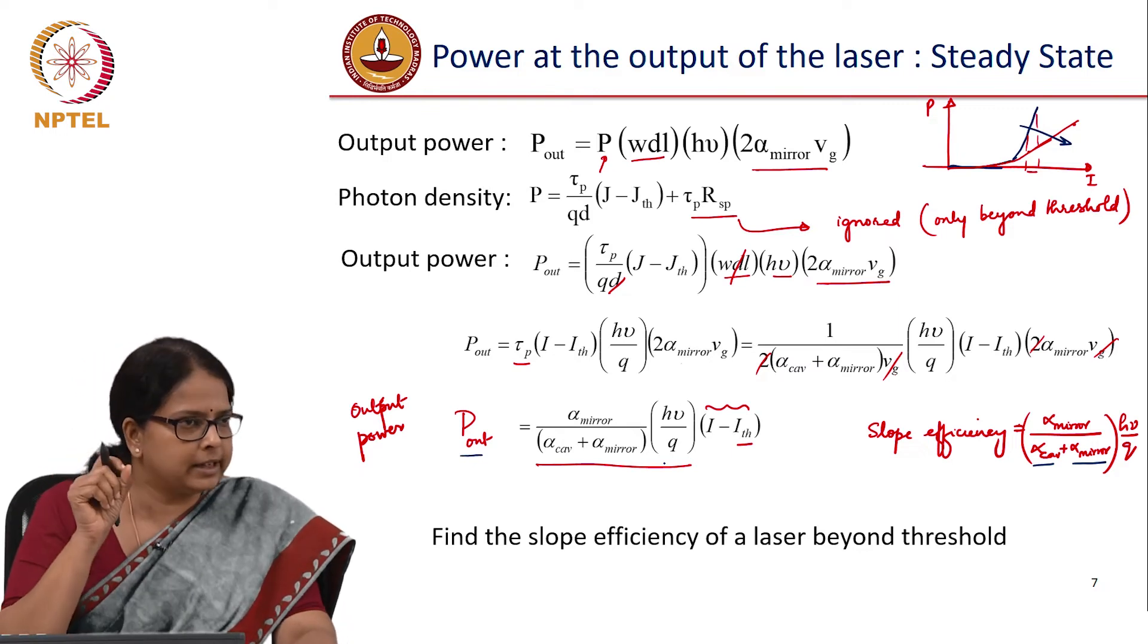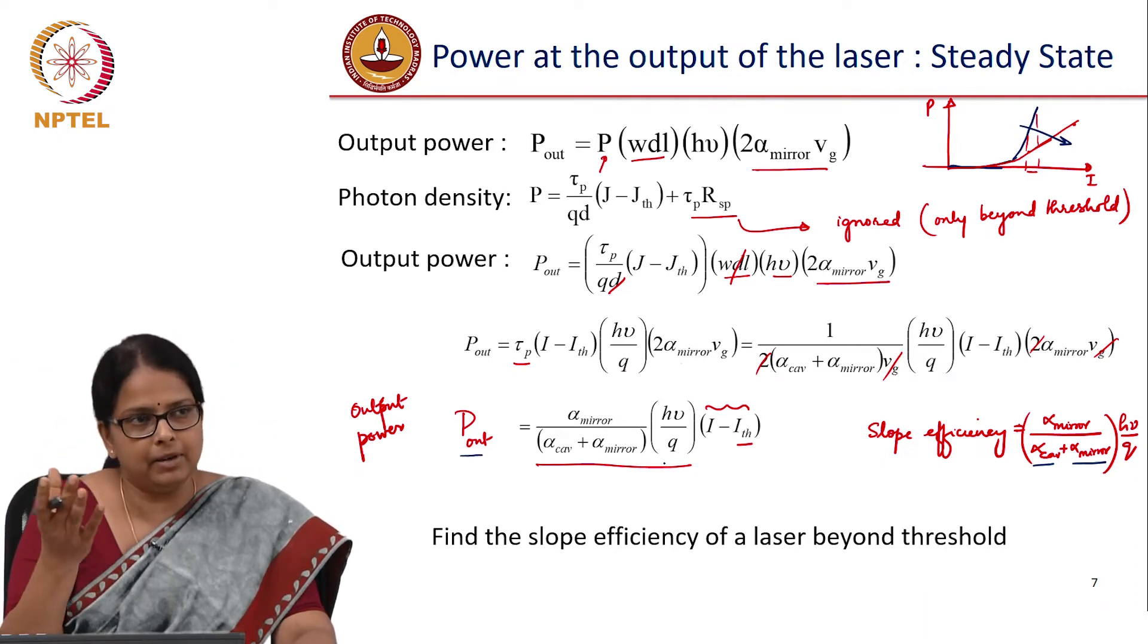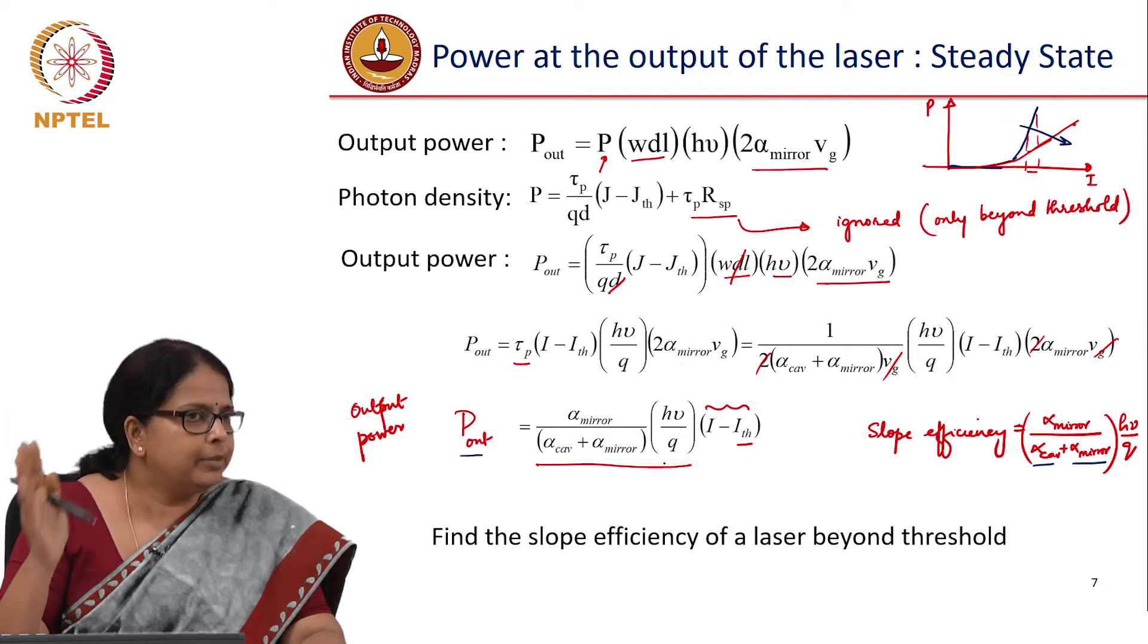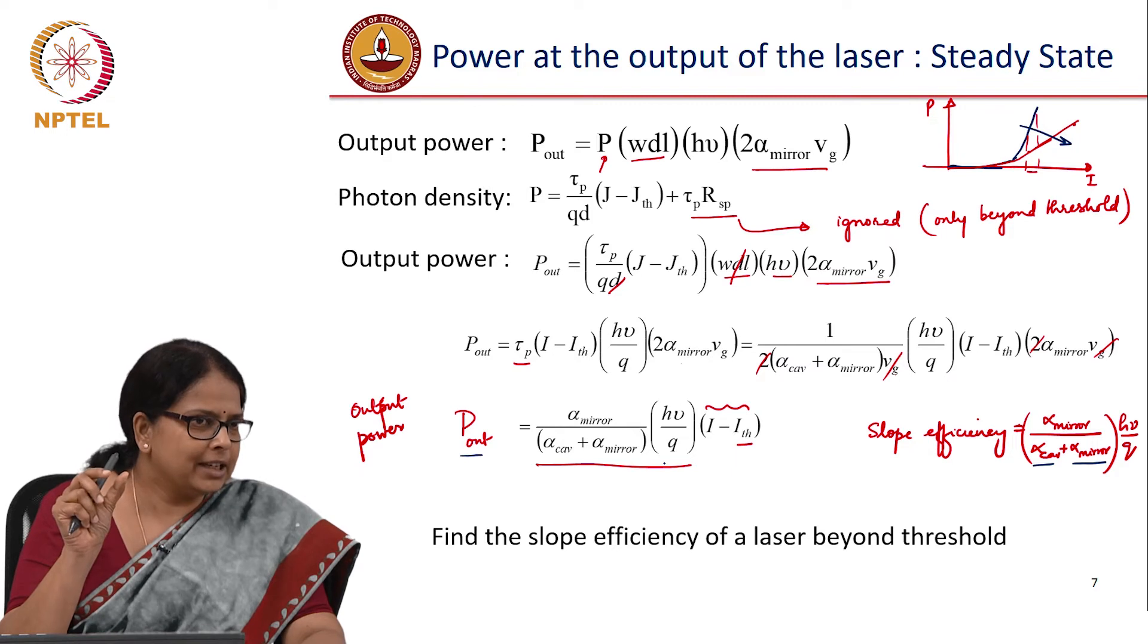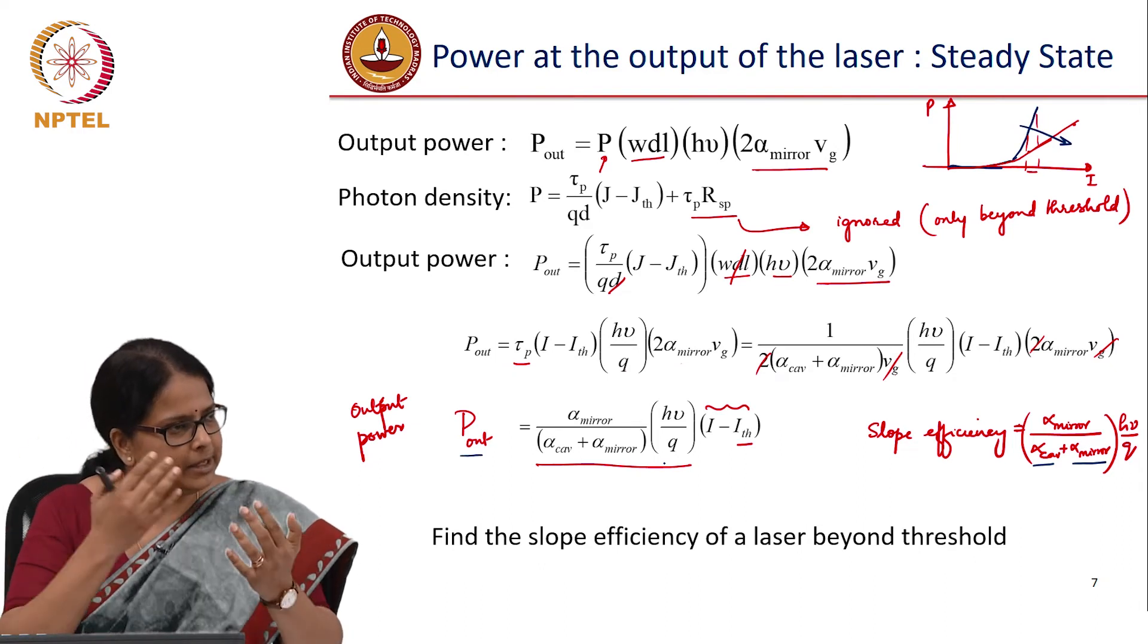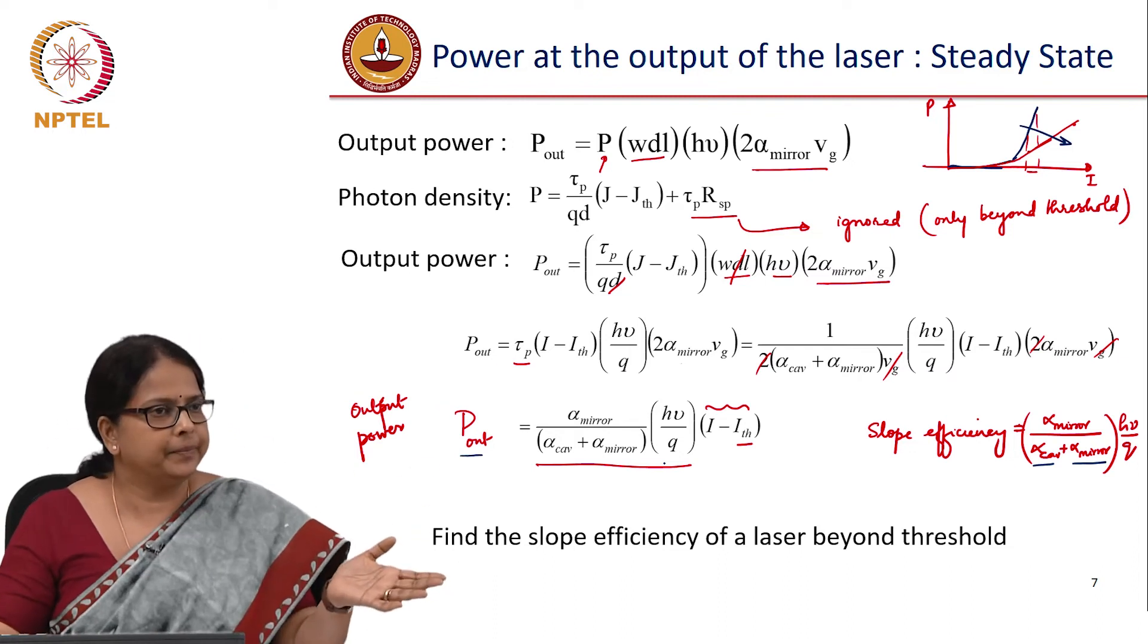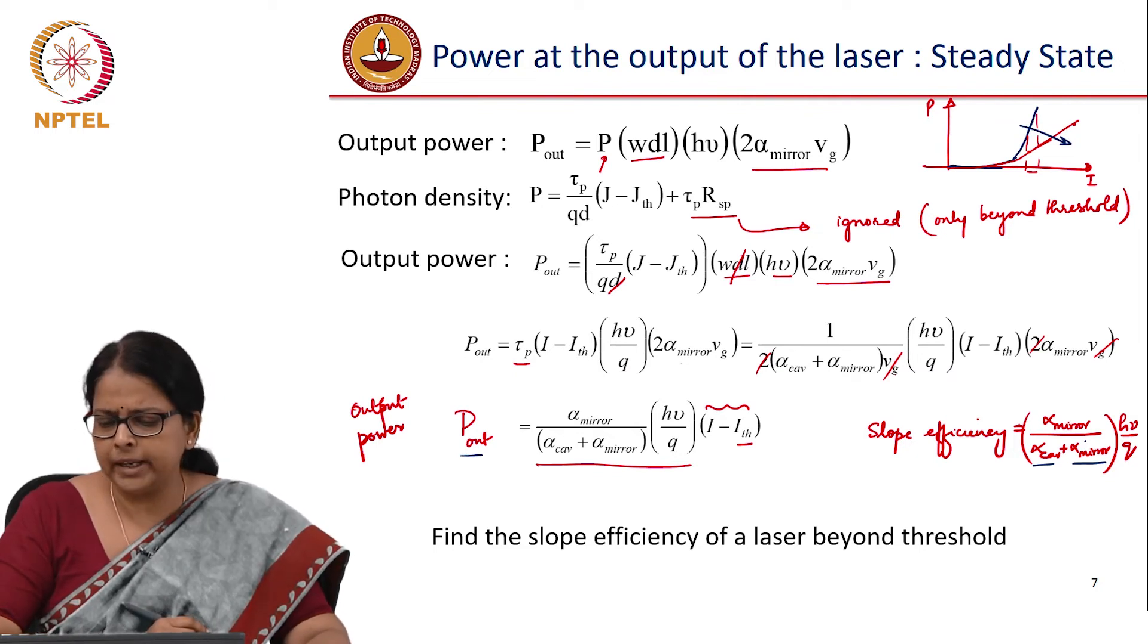Sometimes, some lasers, you do not care about the full width at half maximum. You care only about the power that is available, whereas in some other lasers, you do not care about the power. Power could be low, but I need to have extremely narrow line. So depending on your requirement, you can design your laser cavity. As far as the communication goes, you have to quantify the full width at half maximum because, as we said earlier, you do not want that number to be very large. Because if that number is very large, it means that you have multiple spectral components traveling in the fiber, and because they are not traveling at the same speed, there is a walk-off and there will be a dispersion. So these are your design parameters. So we have got power at the output. Now what?